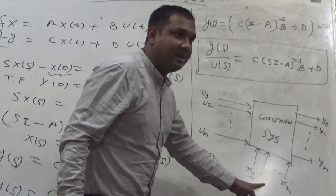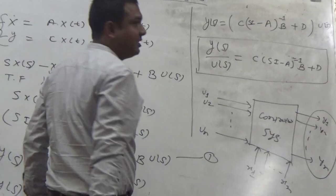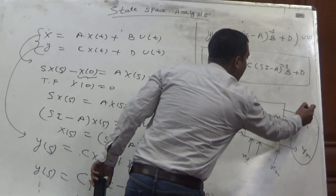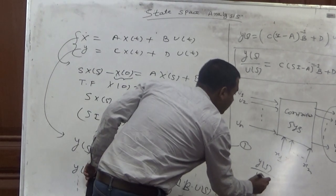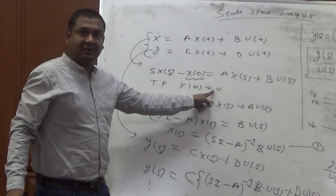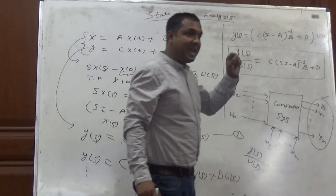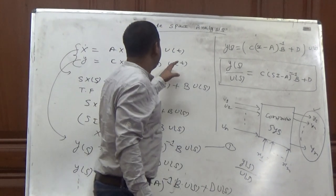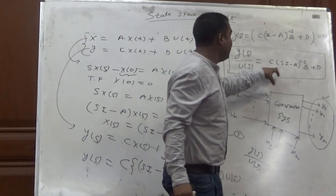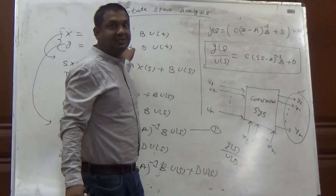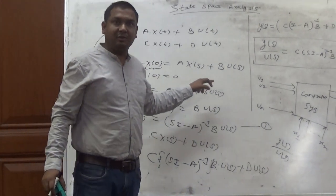From the definition of the transfer function, we can say the ratio of the Laplace transform of output Y(s) divided by the Laplace transform of input, while considering initial conditions are zero, gives us the transfer function. We can derive the transfer function from a given state equation and directly calculate the transfer function of that particular system, considering initial conditions are set to zero. That's all for today — thank you so much.